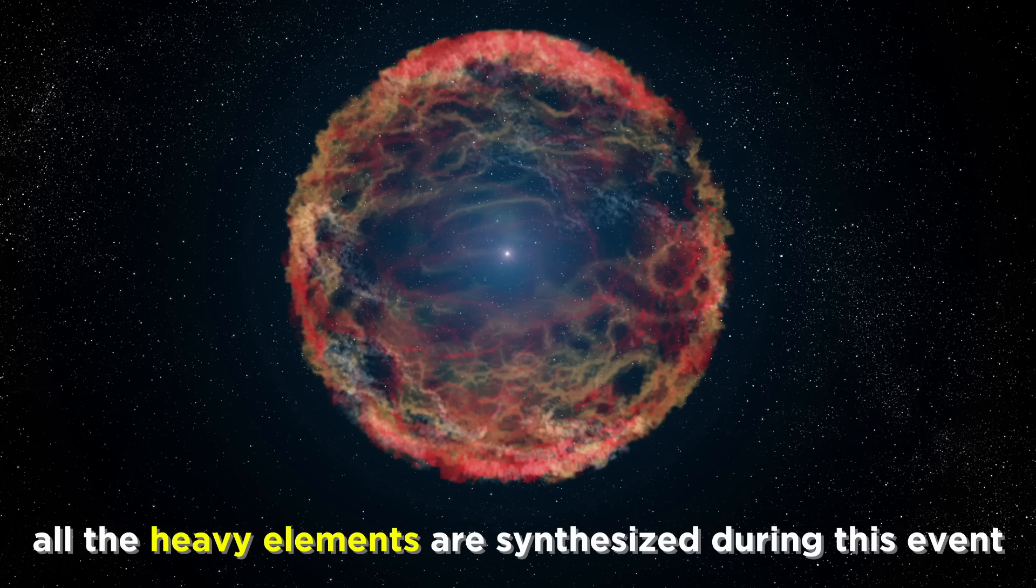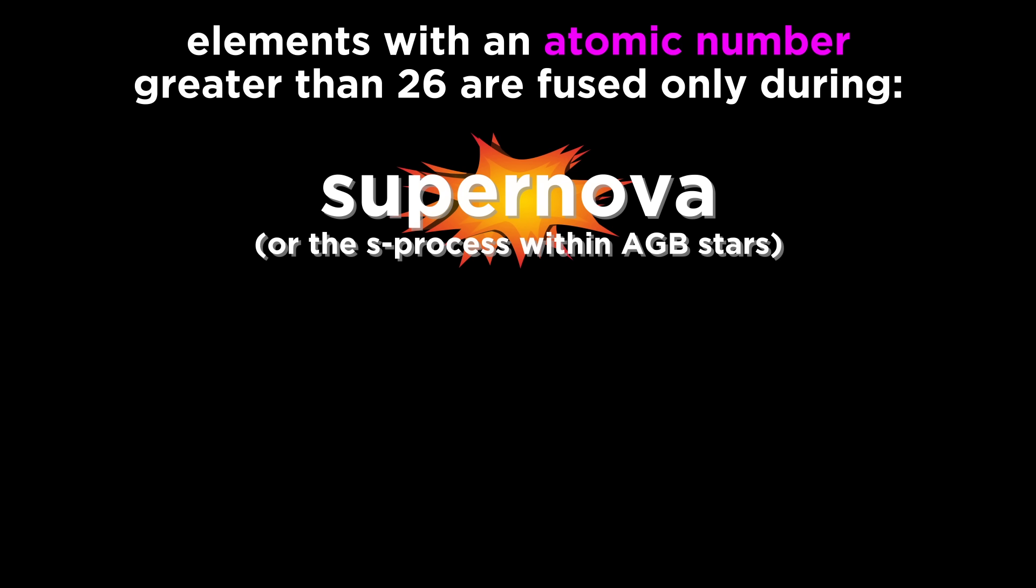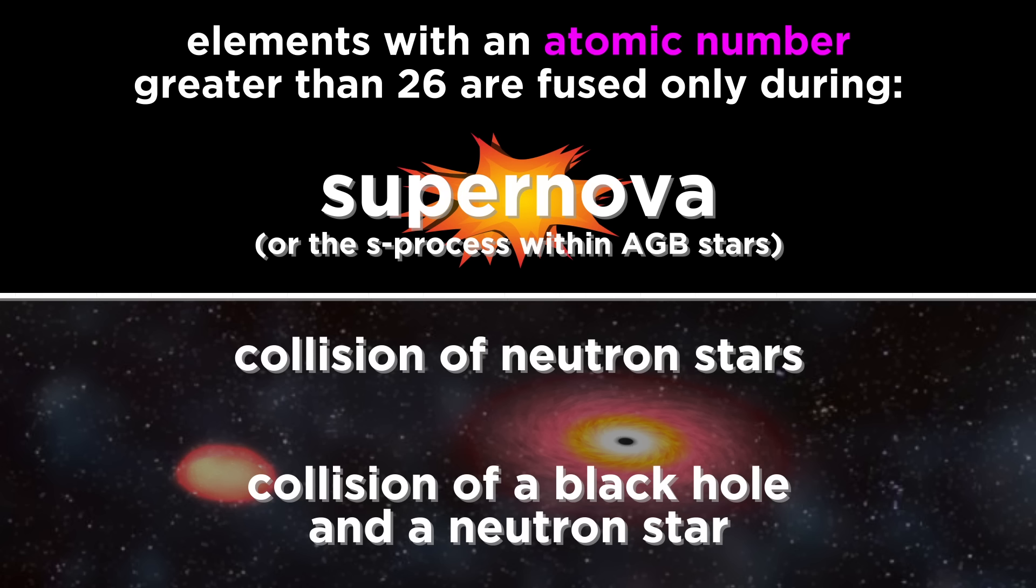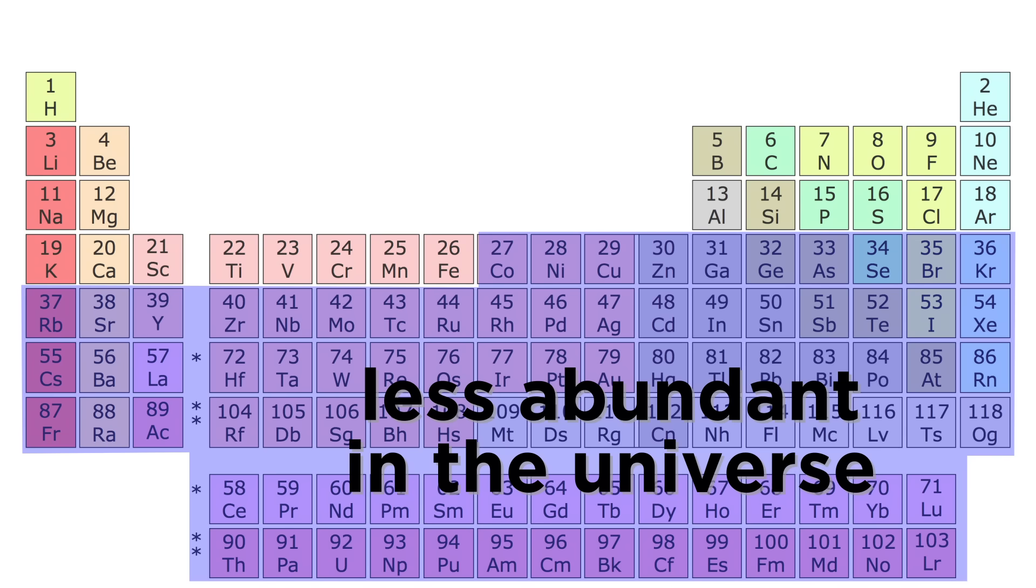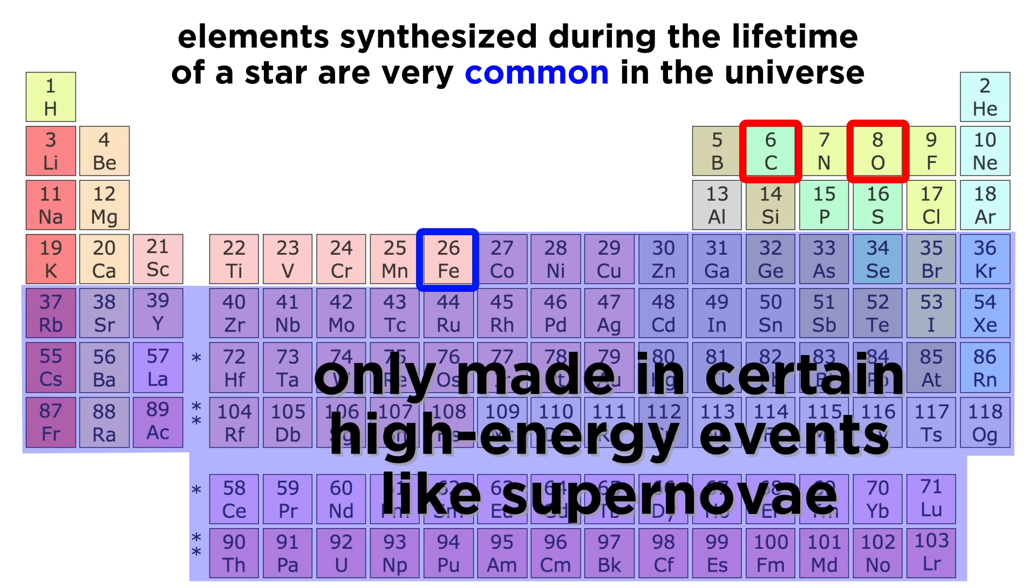A supernova generates such an unbelievable burst of energy that in this brief moment, dozens of elements heavier than iron can also be synthesized, nickel, copper, zinc, silver, gold. Any element with an atomic number greater than 26 is made either in a supernova, or a rare event like the collision of two neutron stars, or a neutron star and a black hole, which are objects we will discuss in a moment. That's why these heavy elements are so rare compared to elements like carbon and oxygen, because stars can't synthesize them the way they can synthesize all the elements up to iron throughout their long lives. Nature only makes these rare elements during the death of a high mass star, or in certain exotic collision events.